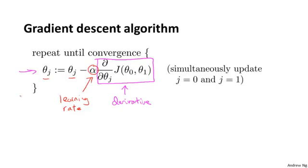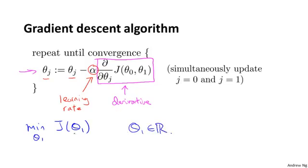In order to convey these intuitions, I want to use a slightly simpler example where we want to minimize a function of just one parameter. So we have a cost function j of just one parameter theta one, where theta one is a real number, so we can have 1D plots which are a little bit simpler to look at. Let's try to understand what gradient descent will do on this function.